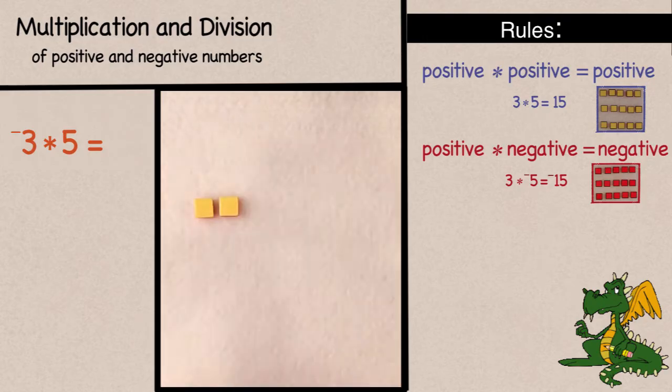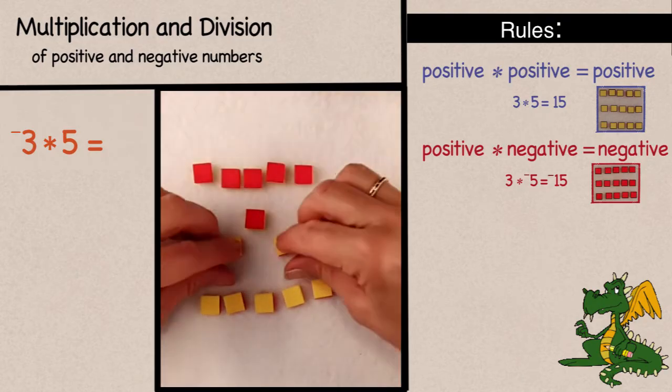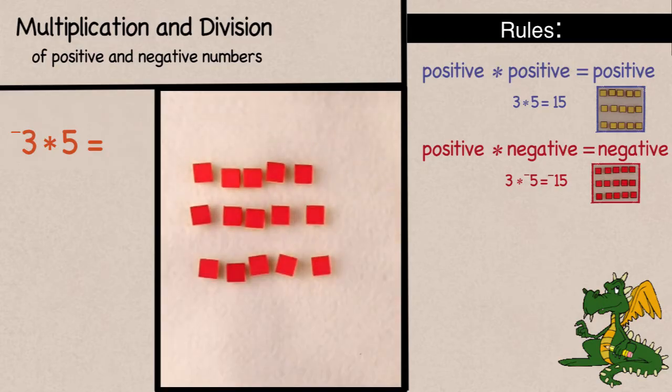we can solve this problem by doing 3 times 5, and then taking the opposite of that answer, and we'll do that by flipping the tiles over. So you can see that we'll end up with negative 15.